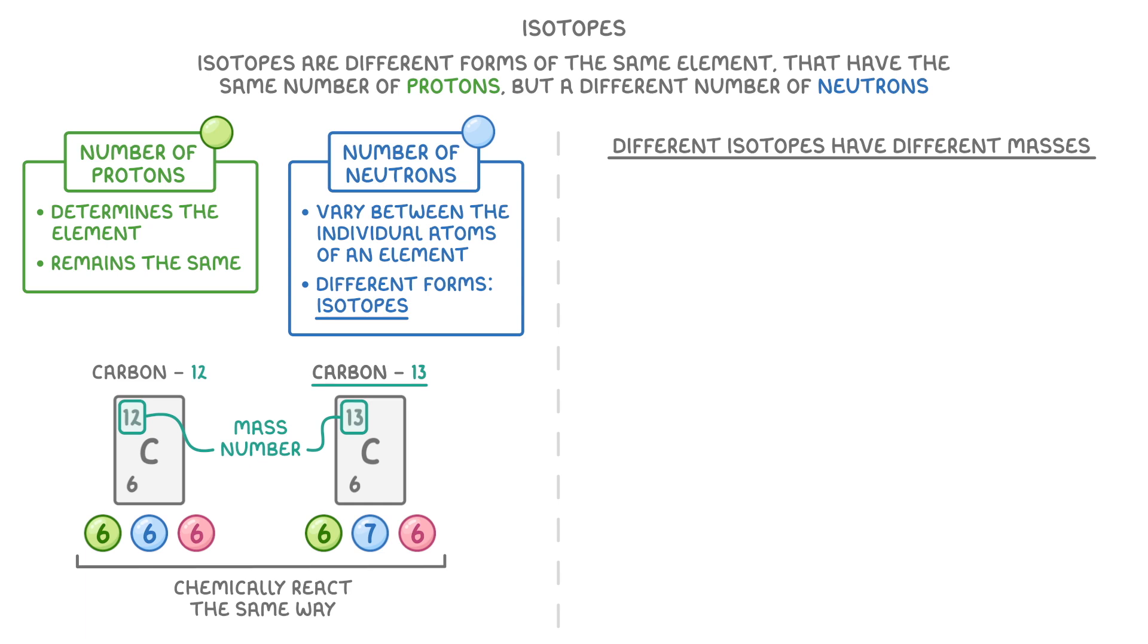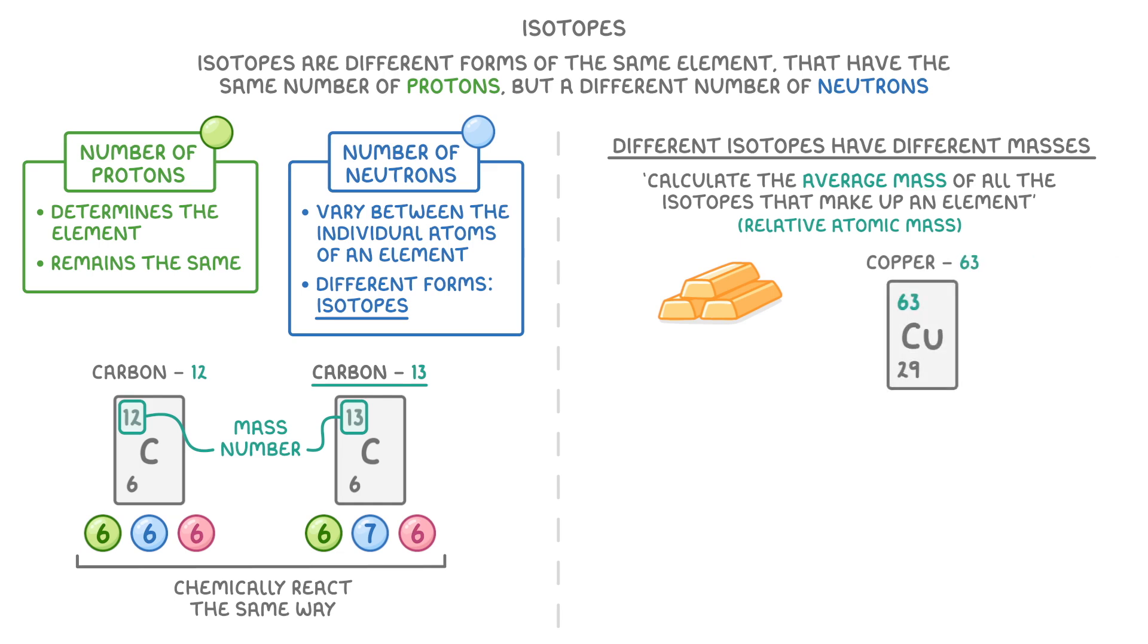And one of the things that you need to be able to do is calculate the average mass of all the isotopes that make up a particular element, which we call the relative atomic mass. Let's take a look at copper as an example. Now copper has two stable isotopes, copper-63, which has an abundance of 69.2%, and copper-65, which has an abundance of 30.8%.